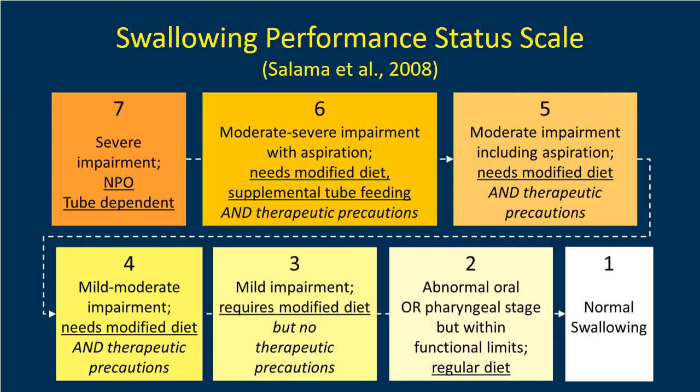The scale includes qualitative descriptions like 'moderate to severe,' and aspiration is part of the severity description. There are really only three types of diet modification mentioned: no oral intake and tube dependency at level seven, supplemental tube feeding alongside some oral intake at level six, and then modified diet or regular diet across the remaining levels. There is no further description of what those modifications entail, so the moment you alter one consistency on a person's diet, they receive a score reflecting some degree of intervention.